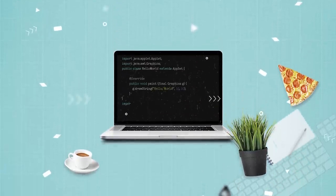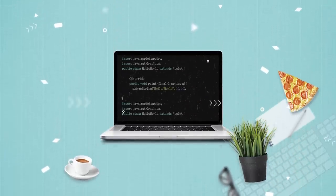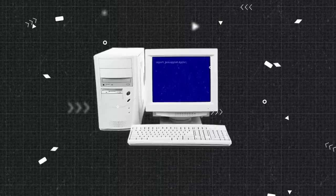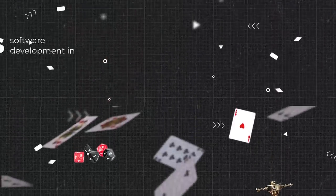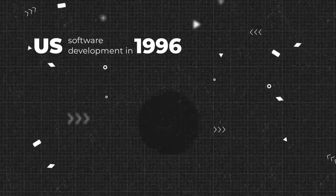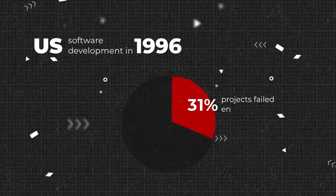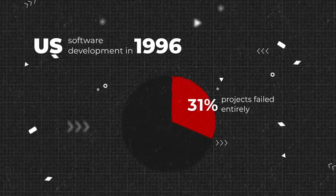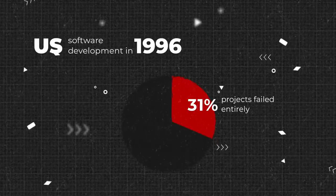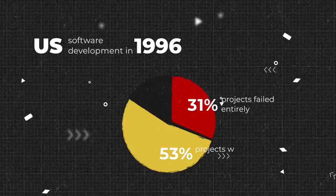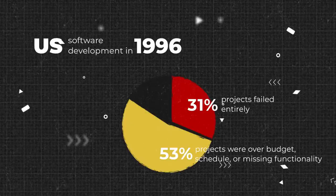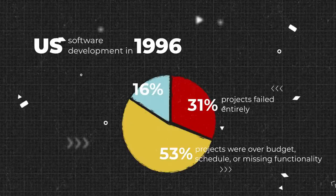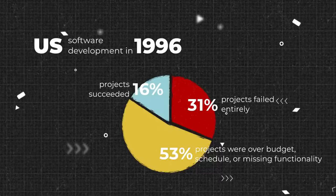Software development is risky. But 25 years ago, building a program was like gambling at a casino. In 1996, 31% of US development projects failed entirely. 53% were over budget, schedule, or missing functionality. And only 16% met initial expectations.